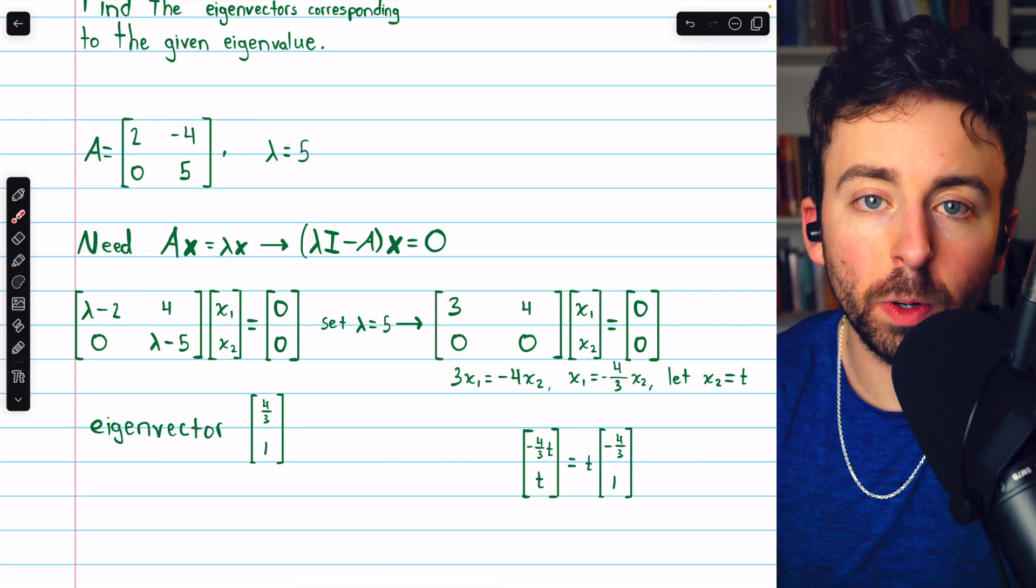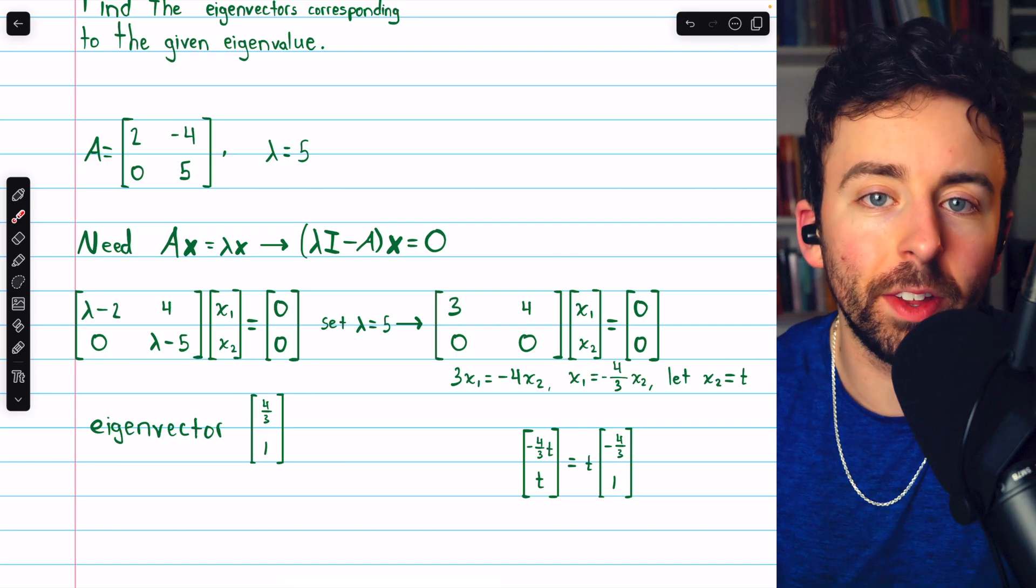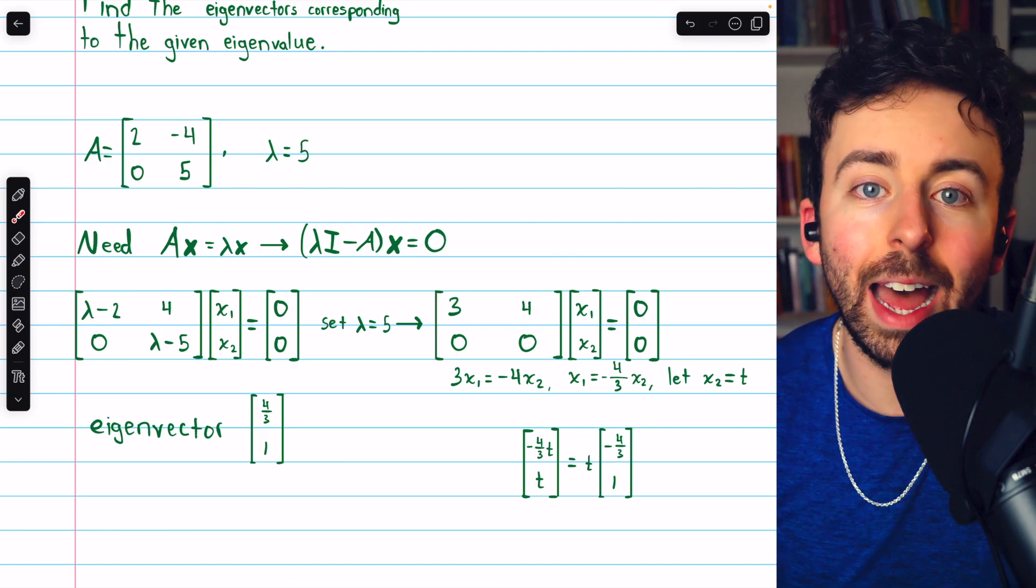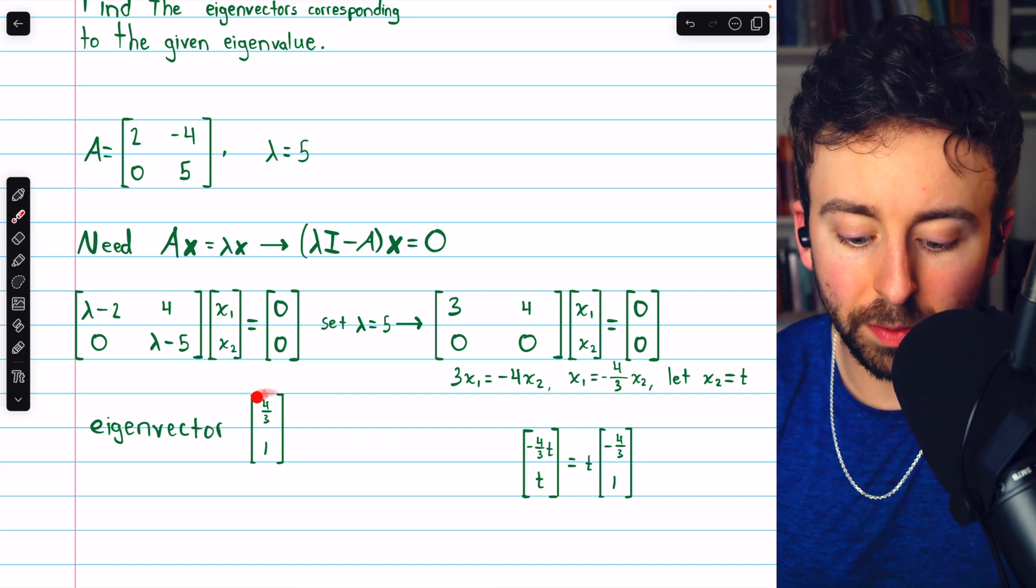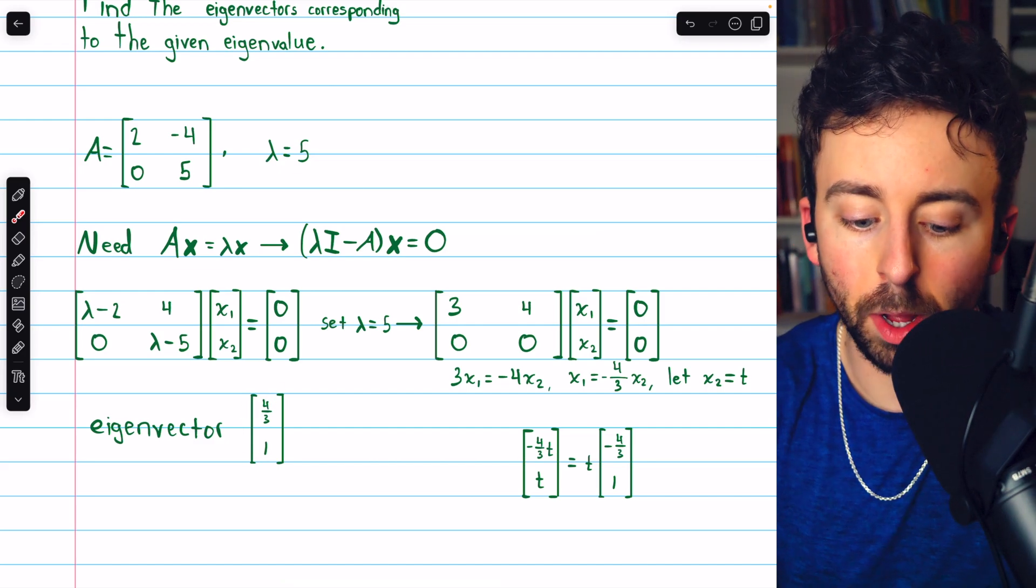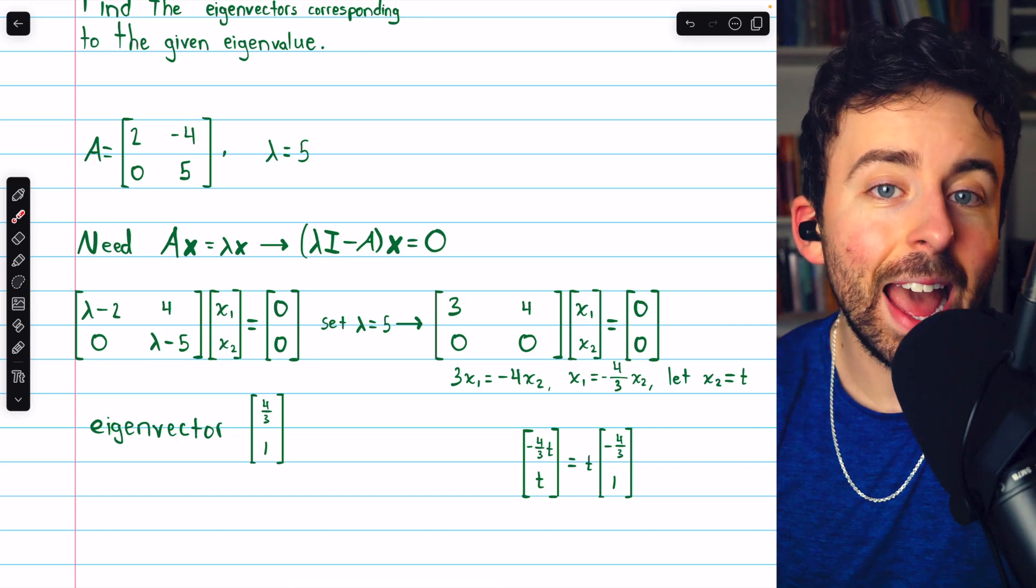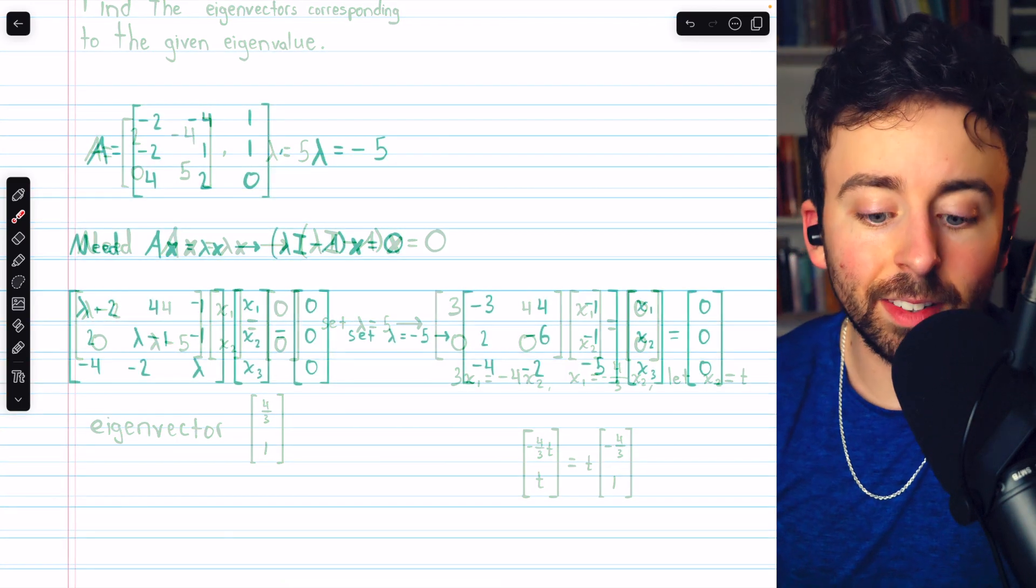So this is one vector that spans what we call the eigenspace. The space of all eigenvectors, including the zero vector. So any scalar multiple of this vector will have the property that multiplying it by the matrix A actually just multiplies its entries by five.